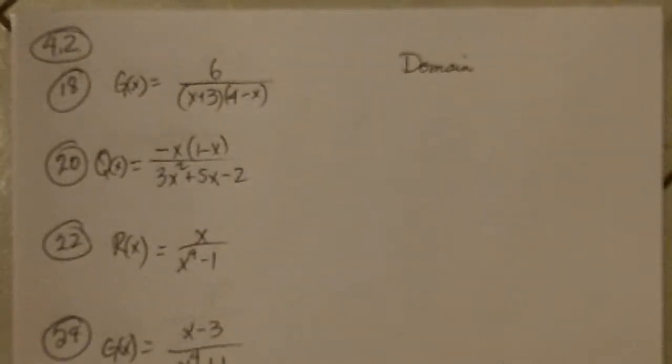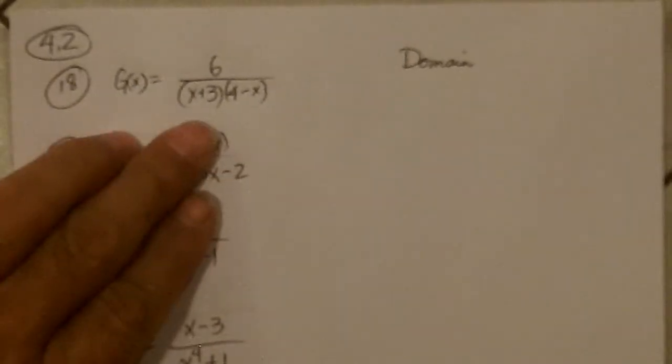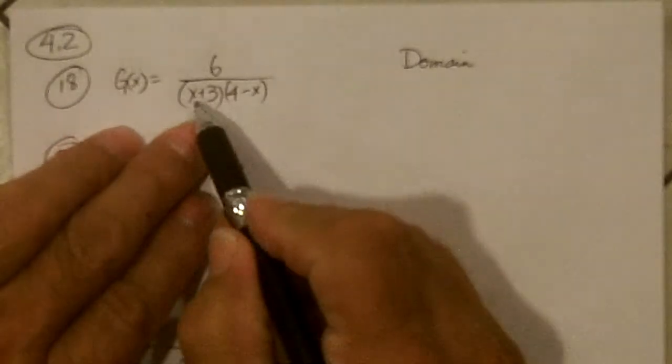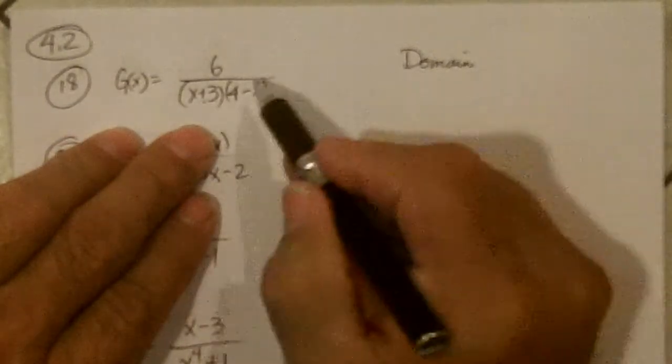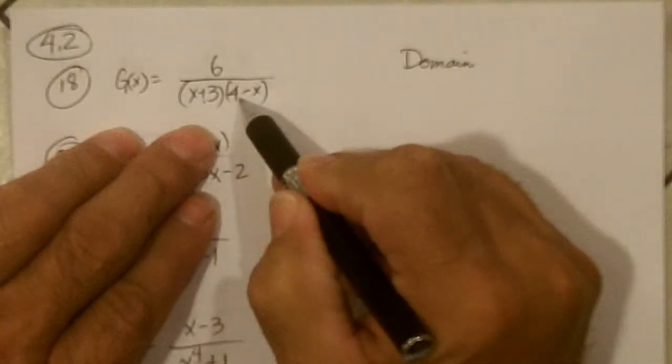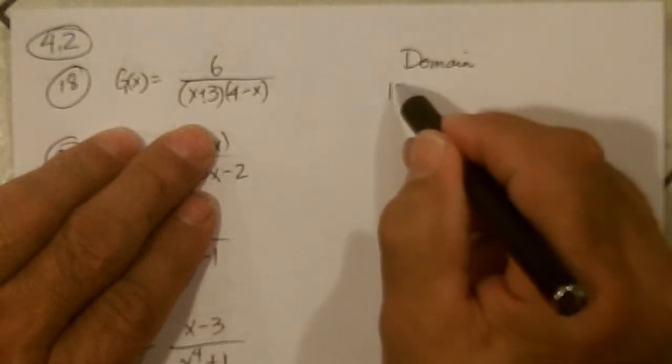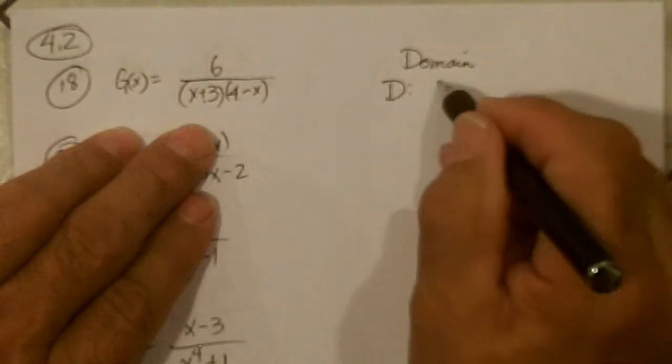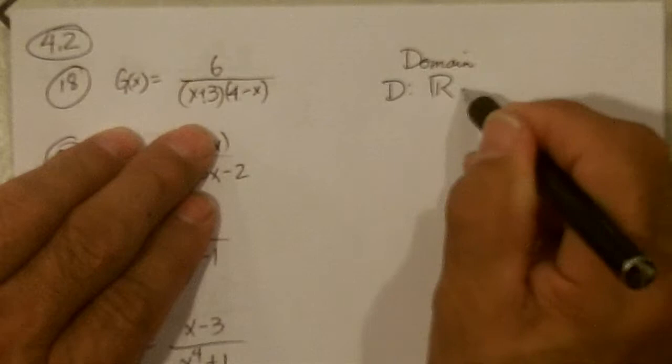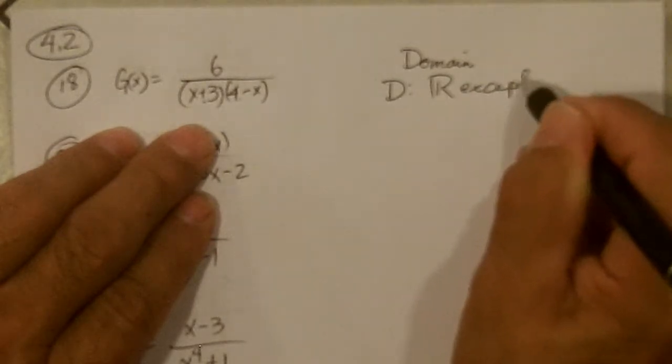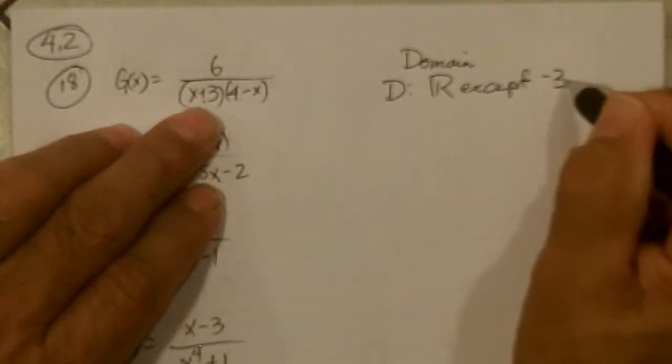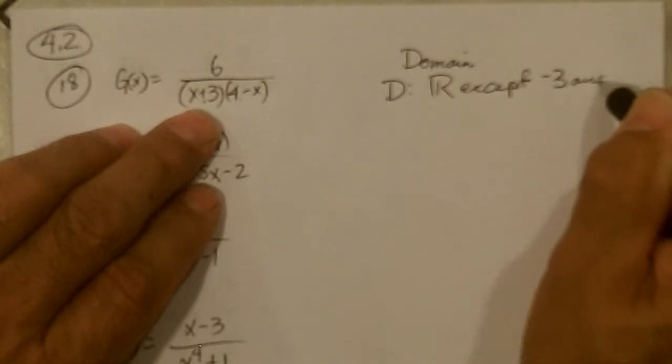Okay, 4.2. First of all, it says what's the domain of this? Well, the domain's going to be, you can't use negative 3 and you can't use a positive 4, so the domain is all reals except negative 3 and 4.